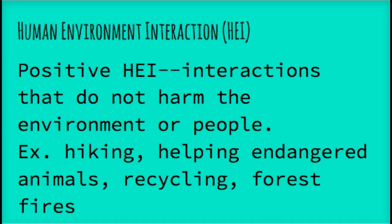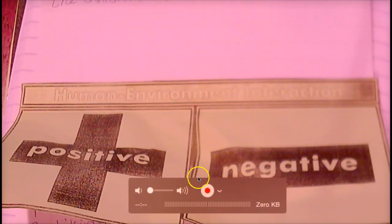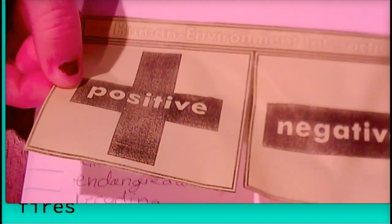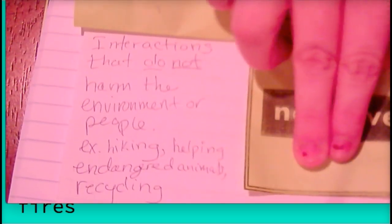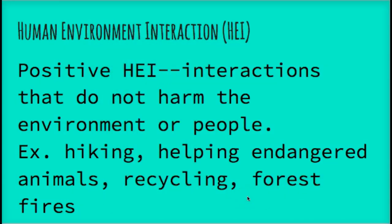There are two types of human environment interaction: positive HEI and negative HEI. Positive HEI are interactions that do not harm the environment or people. Examples can be hiking, helping endangered animals, recycling, and forest fires as long as they're natural and there are no homes in that area — because forest fires do help forests keep growing. These notes are going to go under the positive side of your foldable. Copy these down, and when you're done, play the video.